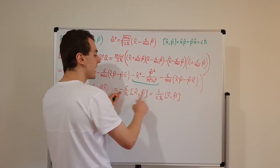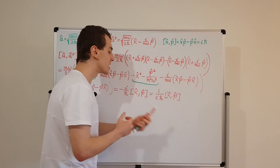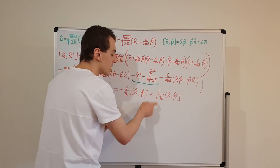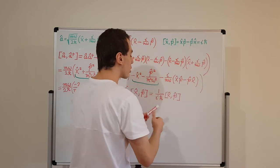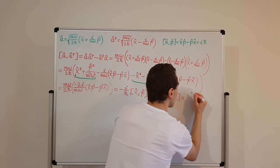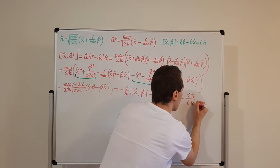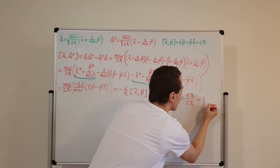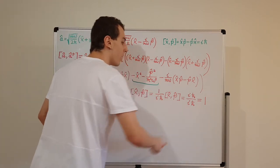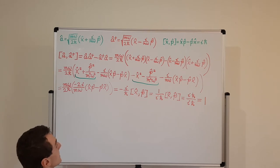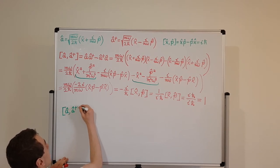Minus i is actually the reciprocal of i — they are multiplicative inverses. Now this commutator of x hat and p hat equals i h bar from the canonical commutation relation. So we have i h bar in the numerator and i h bar in the denominator, and they cancel to give us 1. Therefore, the commutator of a with a dagger is equal to 1.